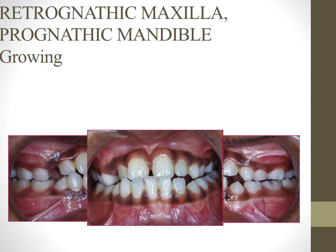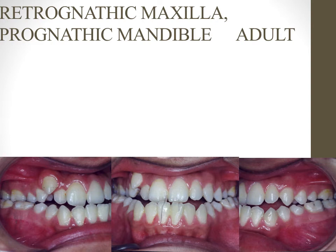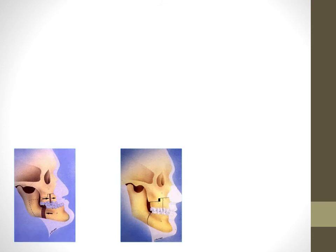For a growing patient with a mild prognathic mandible and retrognathic maxilla, we modulate growth using an orthopedic appliance — the face mask or reverse headgear. Support is taken from the forehead and chin; elastics pull the retrognathic maxilla forward, with a mild restraining effect on the chin that is controversial. For an adult with both jaws at fault — retrognathic maxilla and prognathic mandible — a bi-jaw surgery is planned: the maxilla is advanced and the mandible is set back to achieve an ideal class 1 relationship.